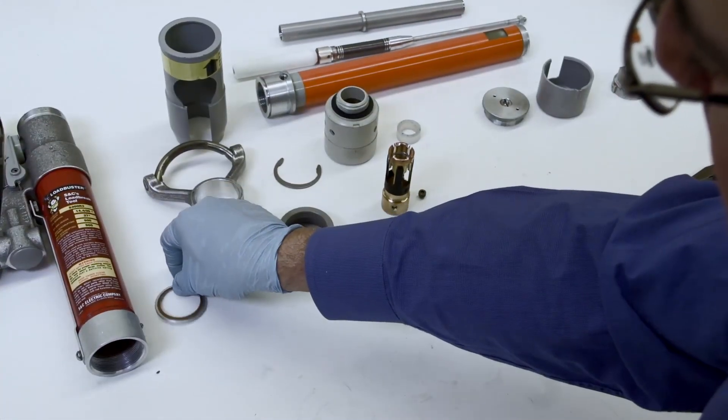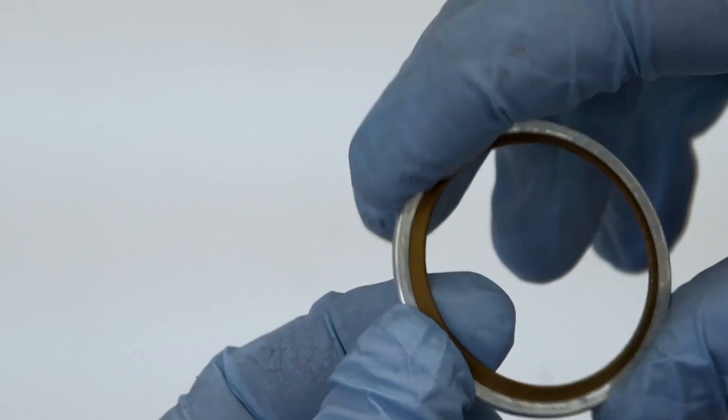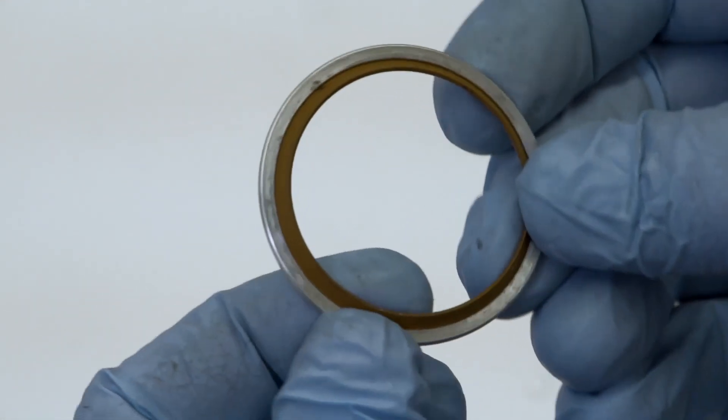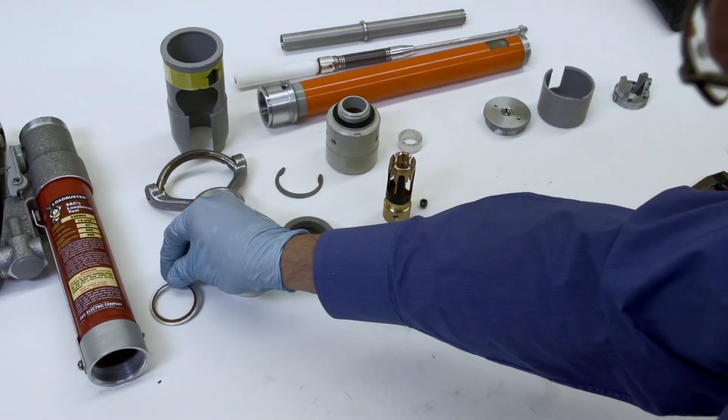Then examine the inner tube seal to make sure the seal is round, the gasket material is free from cracks and is even in shape. Replace the seal if necessary.